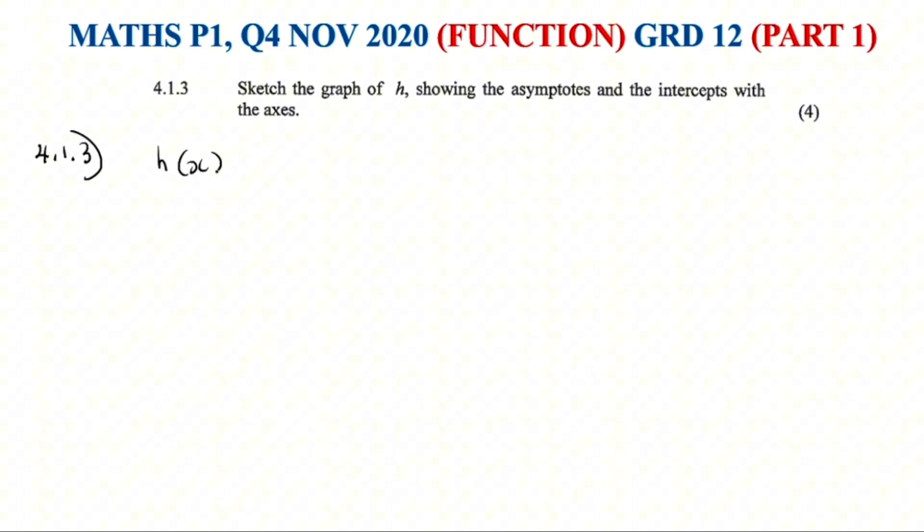4.1.3, the given equation is h of x equals negative 3 over x minus 1 plus 2. So let's have a look here, we are going to look for the x intercept, because they have required us to check all the intercepts. We get it when y equals 0. In this case, that's our y there, so we're going to have to solve. So if this is 0, it equals negative 3 over x minus 1 plus 2.